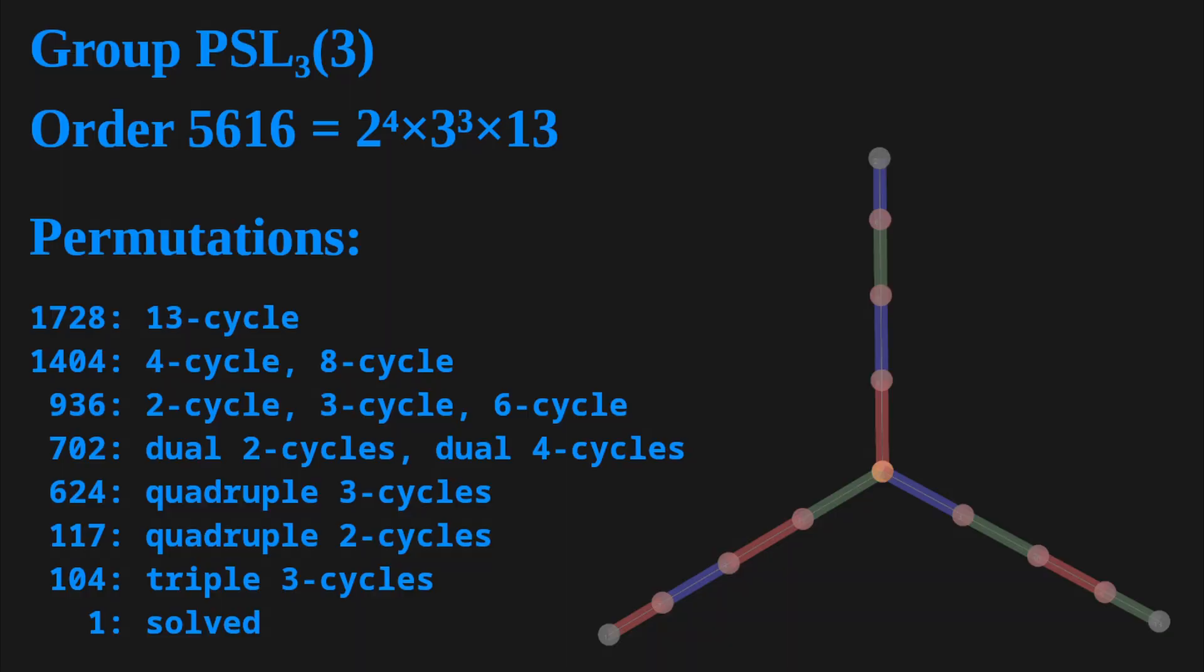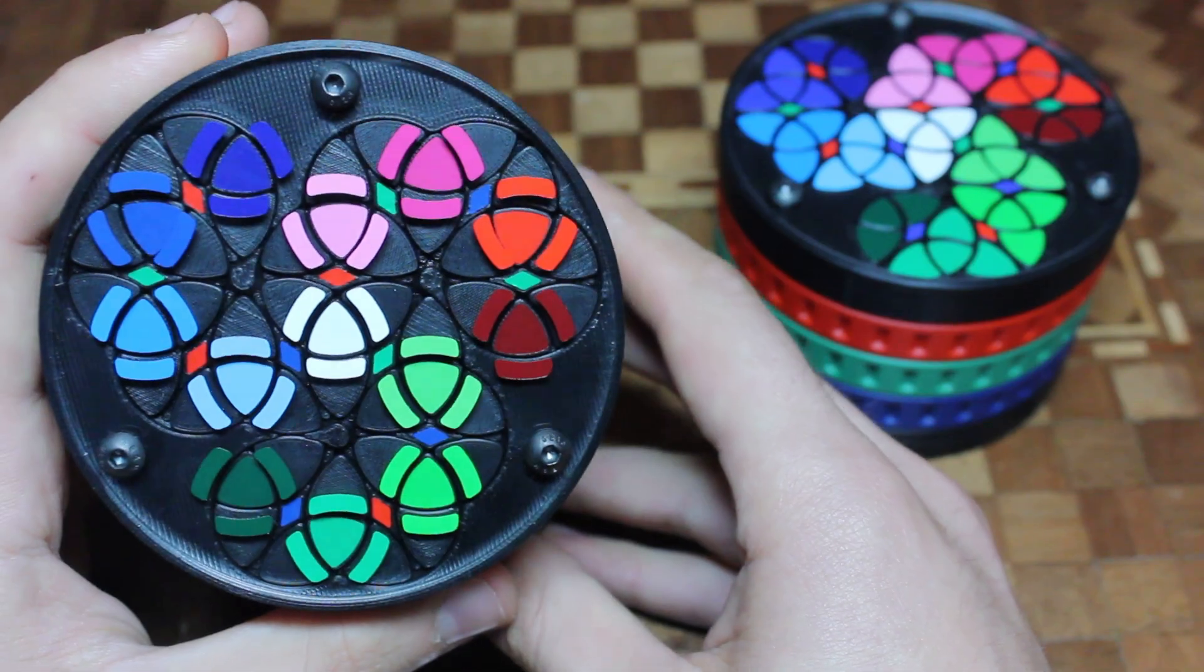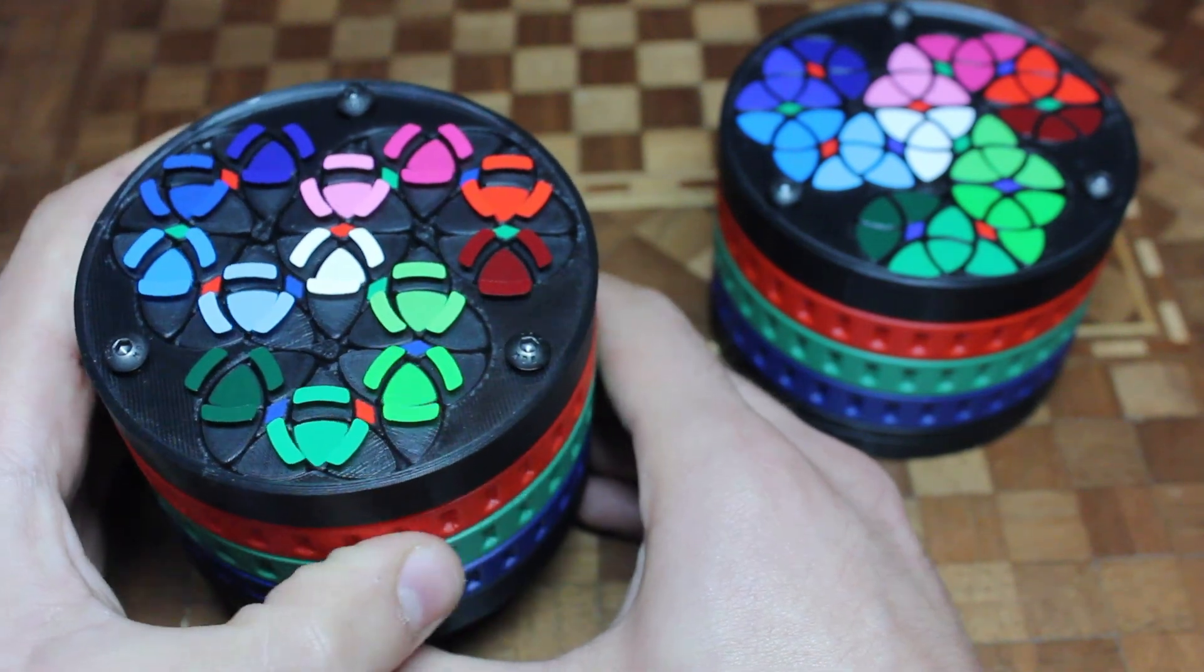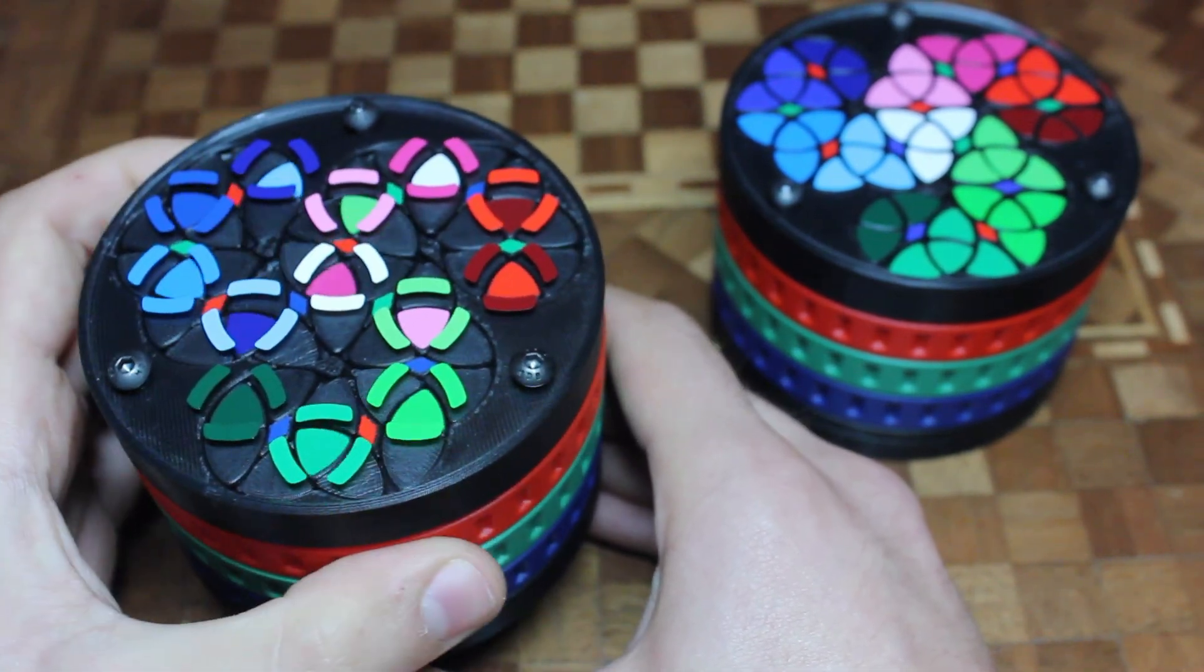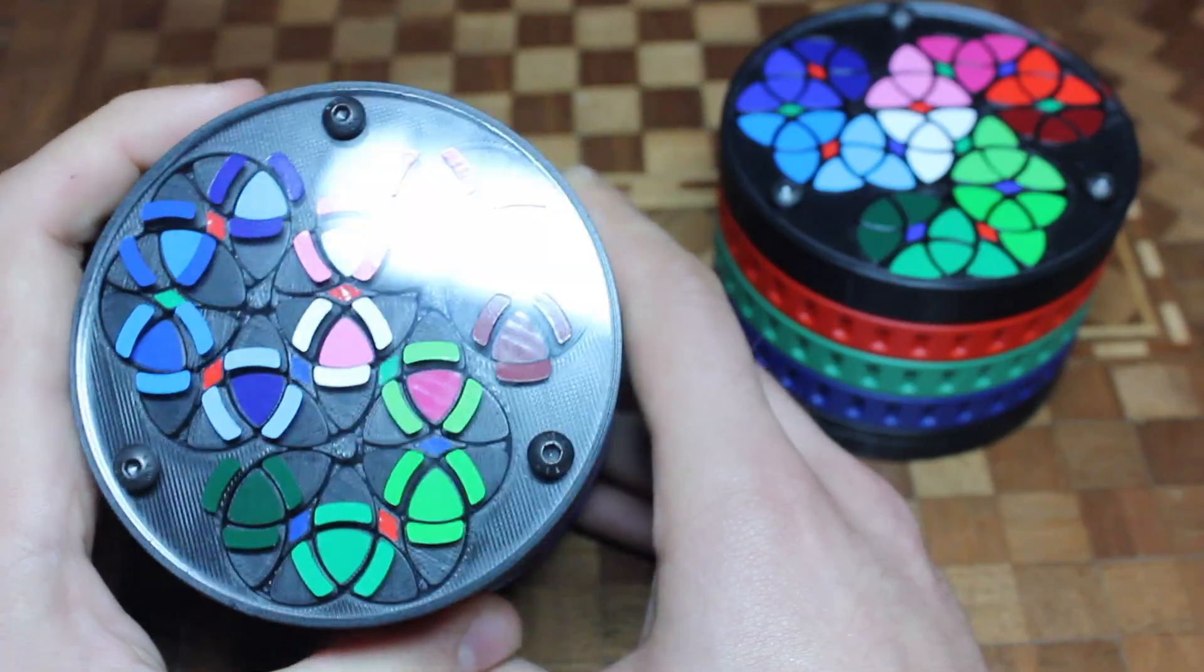The puzzle is designed to express the projective special linear group 3-3 over the 13 triangular pieces. I created a second variation of the puzzle with only the triangle stickered, which is easier to solve but very clearly demonstrates the group symmetries.